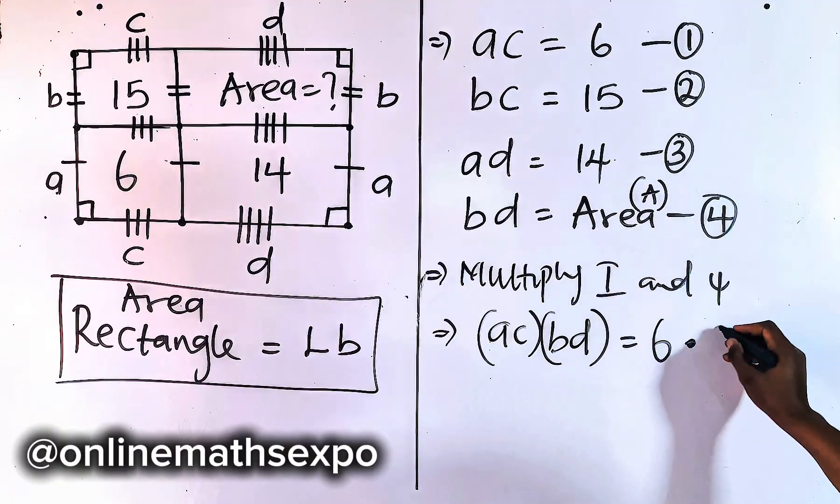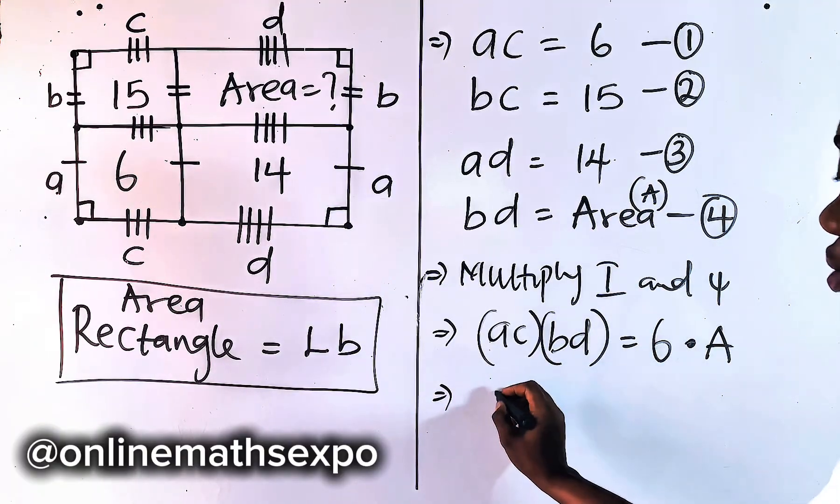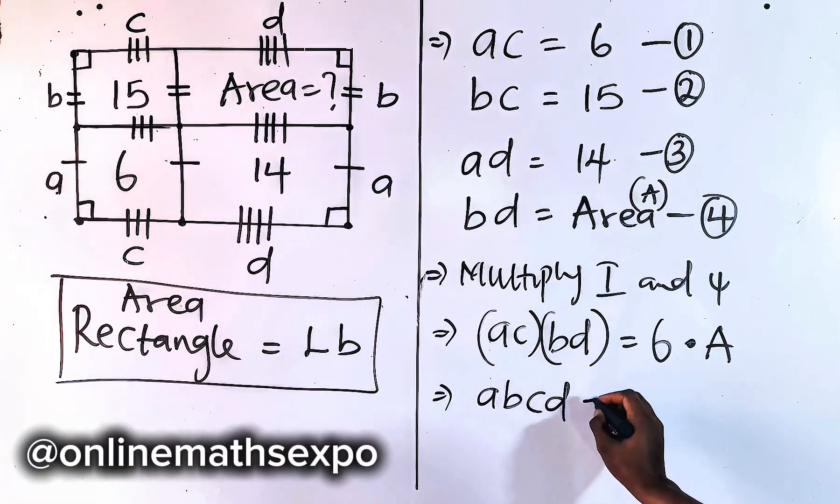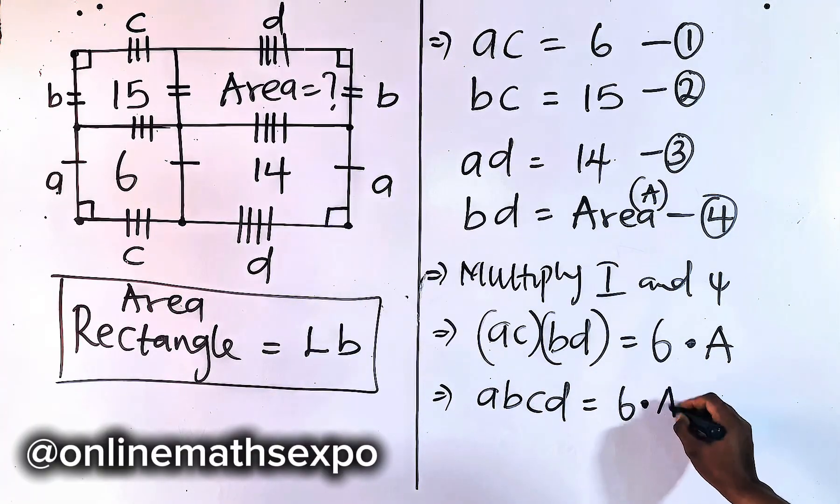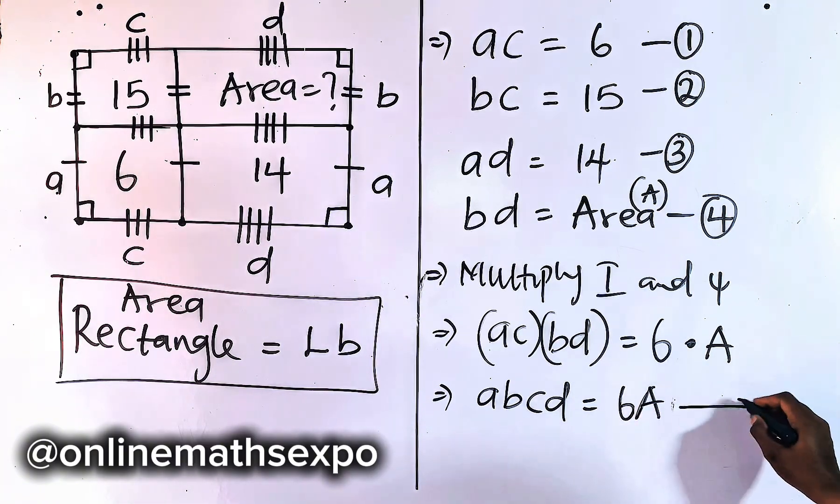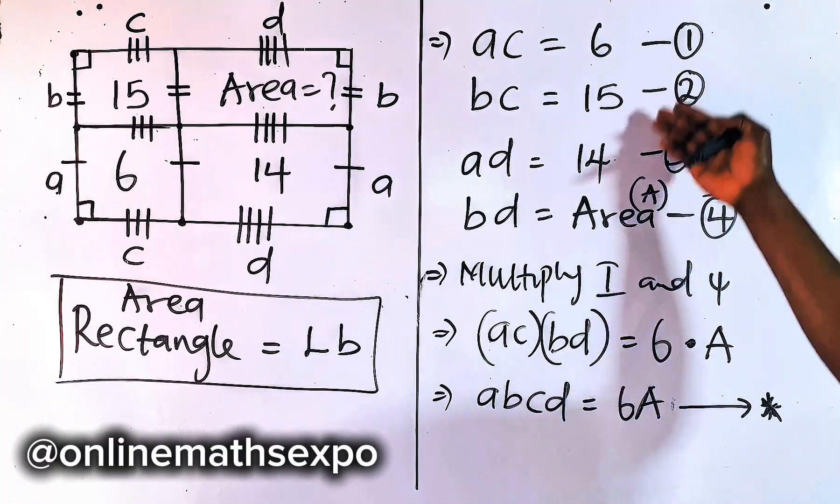This area, we can use A to represent it. So if you simplify this, you are going to have AB multiply, this gives us ABCD is equal to 6 multiplies A. And that is the same as 6A. So we can label this in this form.